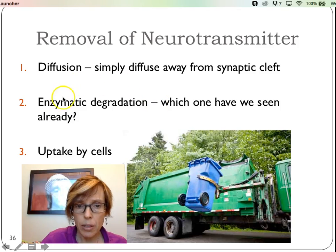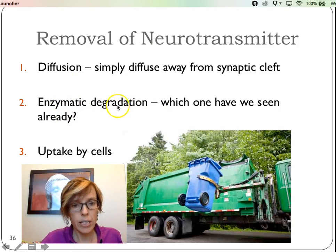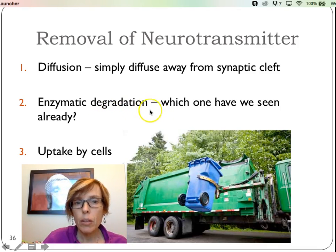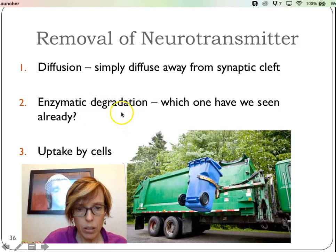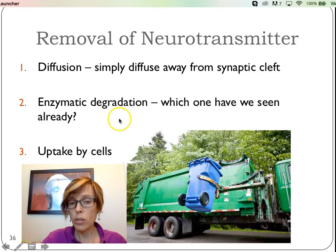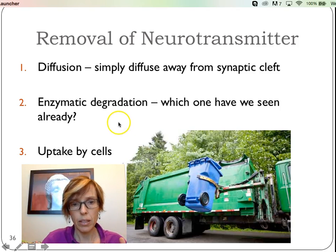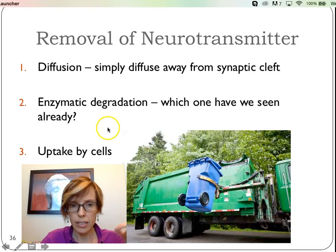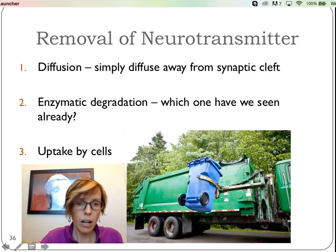There are also enzymes that help degrade the different neurotransmitters. You've probably heard of some involving serotonin. We've actually seen one already when we talked about muscles — the enzyme that broke down acetylcholine in the synaptic cleft was acetylcholinesterase. It helped clear it from the synaptic cleft and allowed for more specific signals sent to muscles. And then finally, some of that neurotransmitter is simply taken up by cells and recycled.